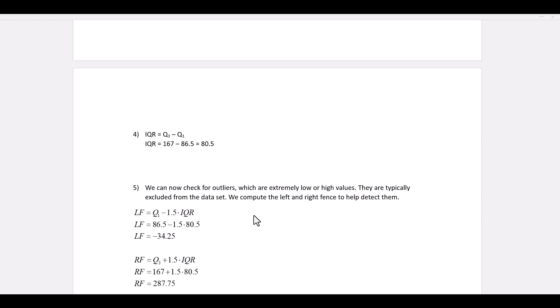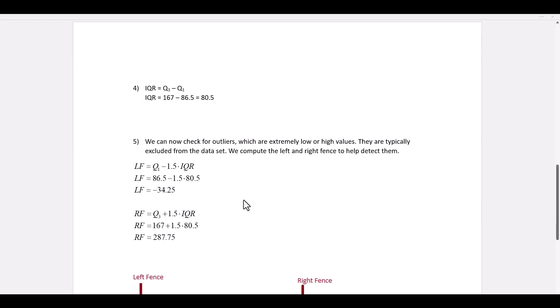We can also use quartiles to check for outliers. Outliers are extremely low or high values. They are typically excluded from the data set. To detect the outliers, we have to compute the left and right fence.